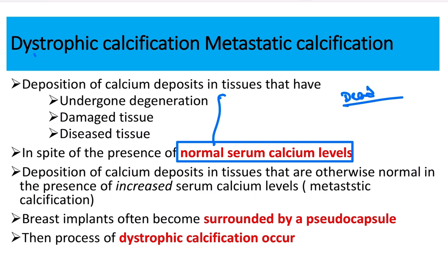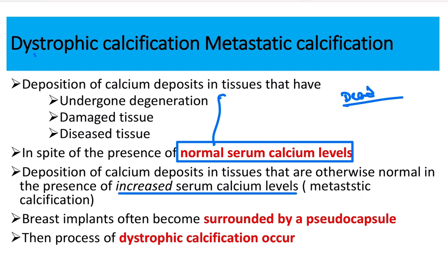Metastatic calcification, on the other hand, involves deposition of calcium deposits in tissue that is otherwise normal, in the presence of an increased serum calcium level. So in metastatic calcification, the serum calcium level is elevated.